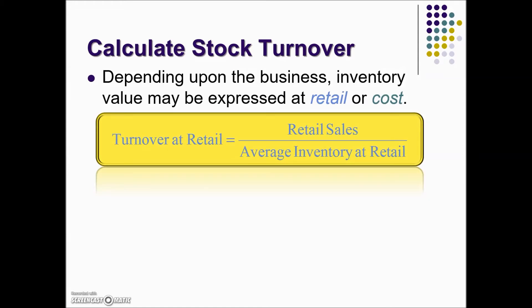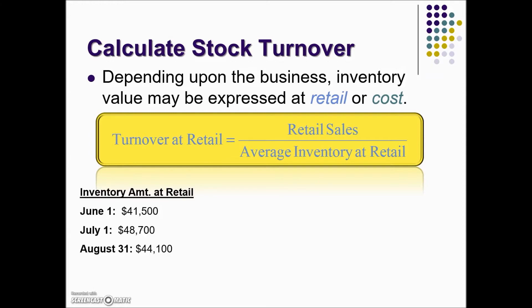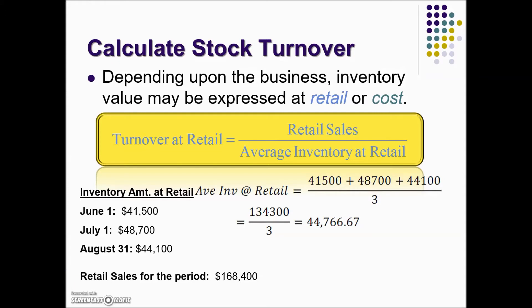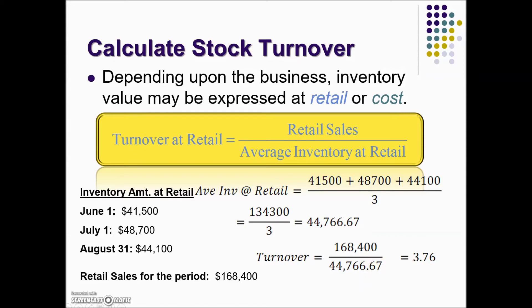Turnover at retail is found by taking retail sales divided by average inventory at retail. Here is the inventory at retail — this is the sum of the price tags on everything in the store at three different dates. The sales during this period are given. The first thing we need to determine is the average inventory at retail, so we take the three values from the inventory at retail, find the average — that is our denominator value — and then find the turnover at retail by taking the retail sales for this period divided by that average.